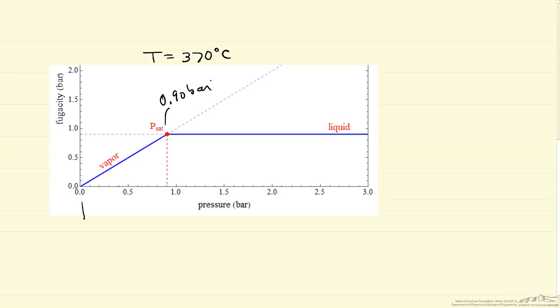In this region, vapor has the lower fugacity, so it's the stable phase. Fugacity is just equal to pressure, ideal gas, this is a straight line. Here, fugacity is equal to the saturation pressure.